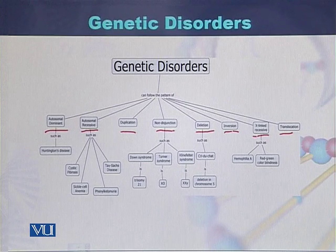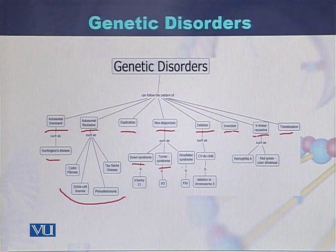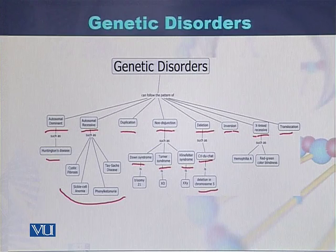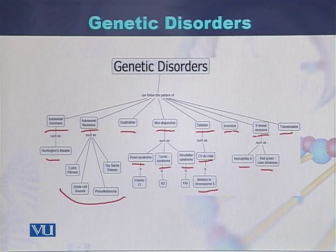For autosomal dominant diseases, the classic example is Huntington's disease. For non-disjunction disorders, the most common are Down syndrome, Turner syndrome, and Klinefelter syndrome. In case of deletions — specifically deletion on chromosome 5 — the most common disease is Cri-du-chat syndrome. For X-linked disorders, the most common examples are hemophilia and red-green colorblindness.